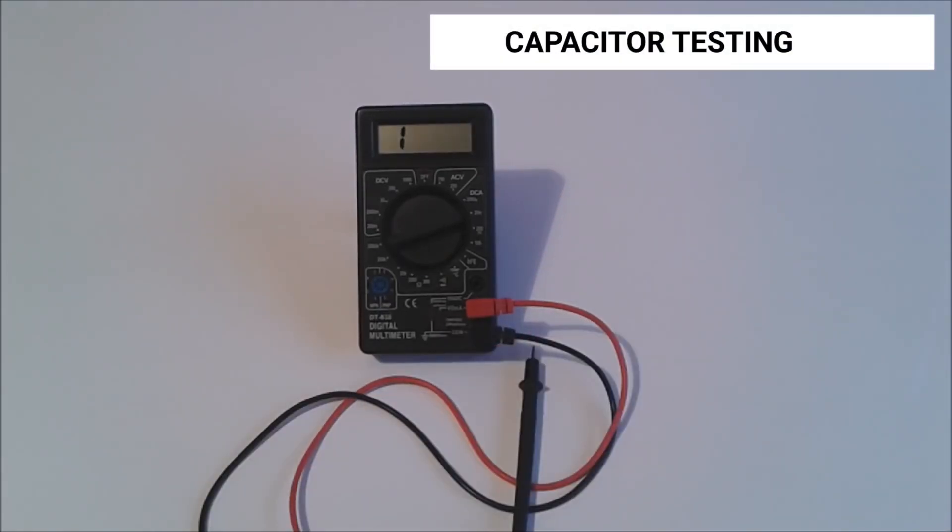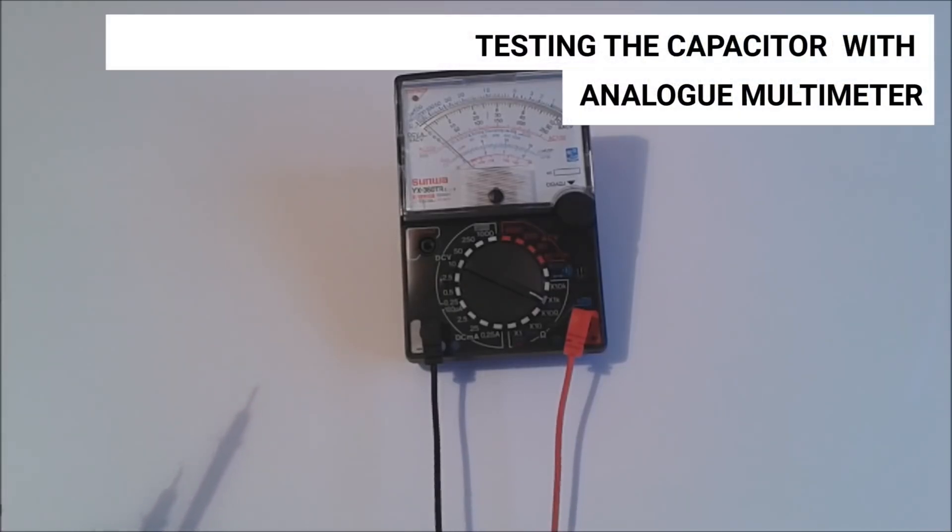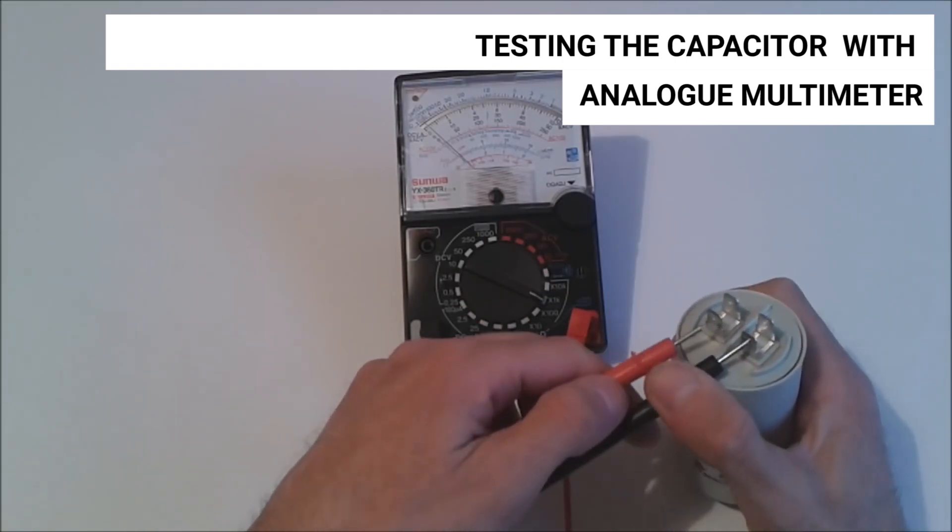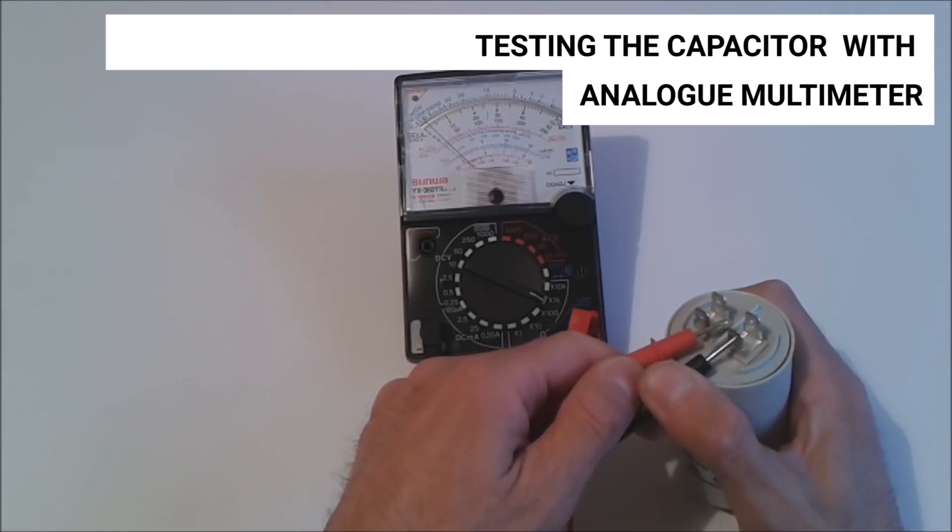A similar test can be performed with a multimeter with a moving coil. Here is a multimeter with a moving coil. We will connect the capacitor and see the pointer turning all the way to the right and it gradually returns to the left side, that is to infinite resistance.